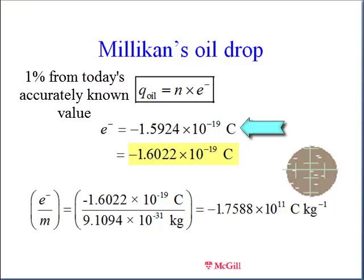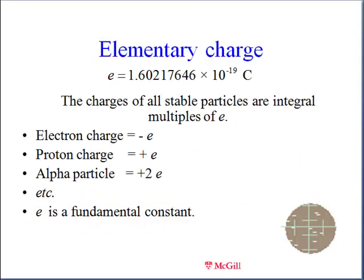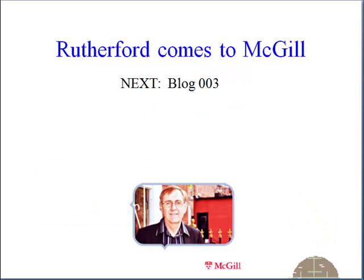Here is Millikan's first published value, which is within one percent of today's accurately known value. With this charge it is possible to extract the mass of the electron. The magnitude of the charge on the electron is called the fundamental charge — it is the smallest charge found to date on stable particles. The electron has a charge of minus e, the proton a charge of plus e, and an alpha particle a charge of 2 plus e. The charge e is a fundamental constant that cannot be broken down into more fundamental parts. In my next entry I will talk about Rutherford's experiment, which was done at McGill University in Montreal.